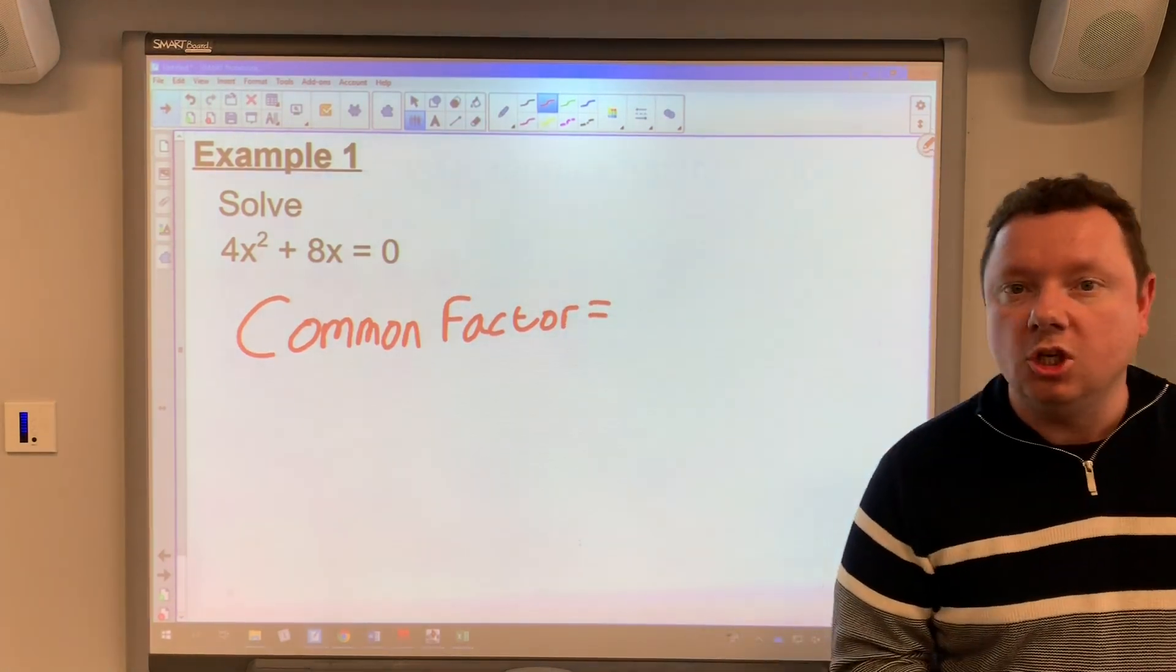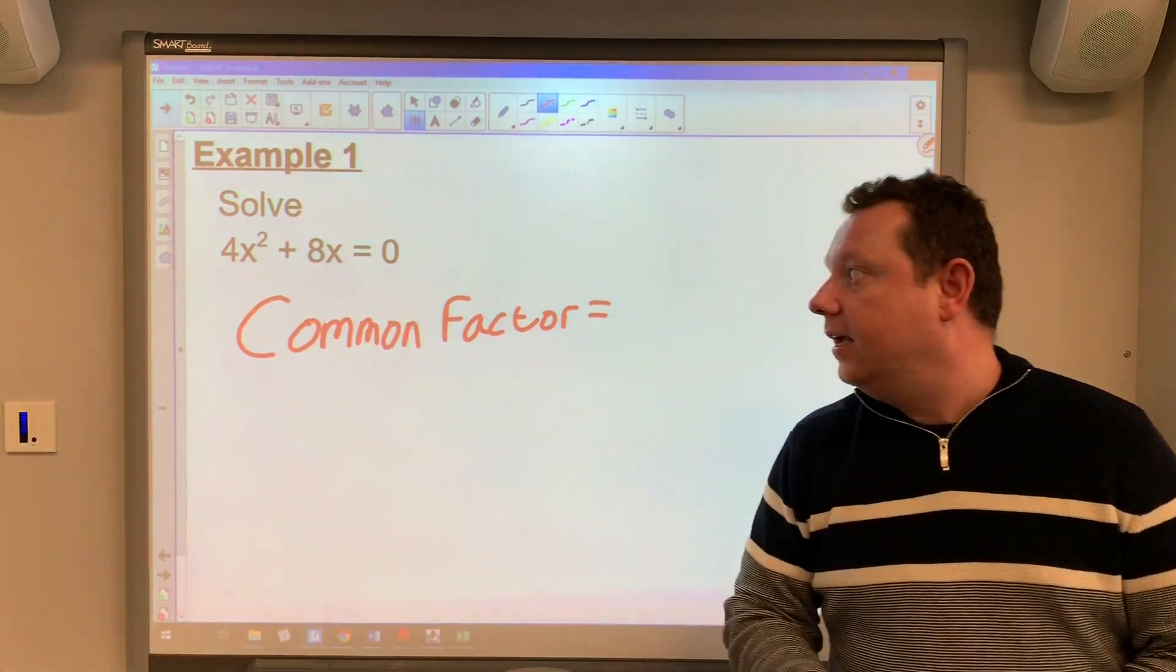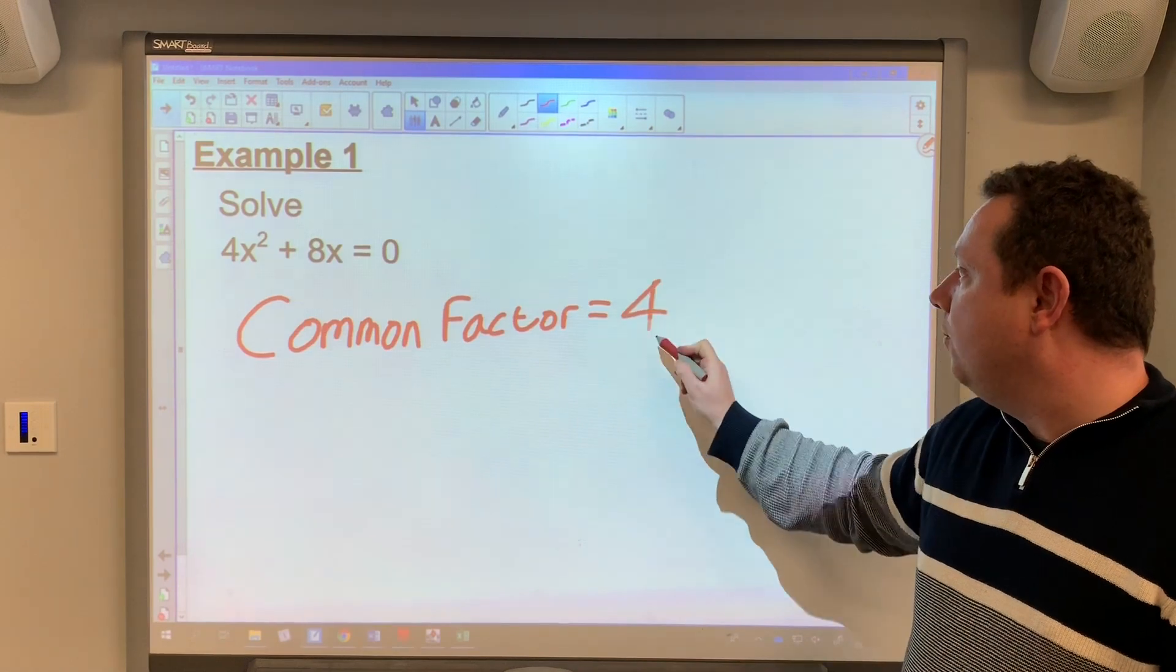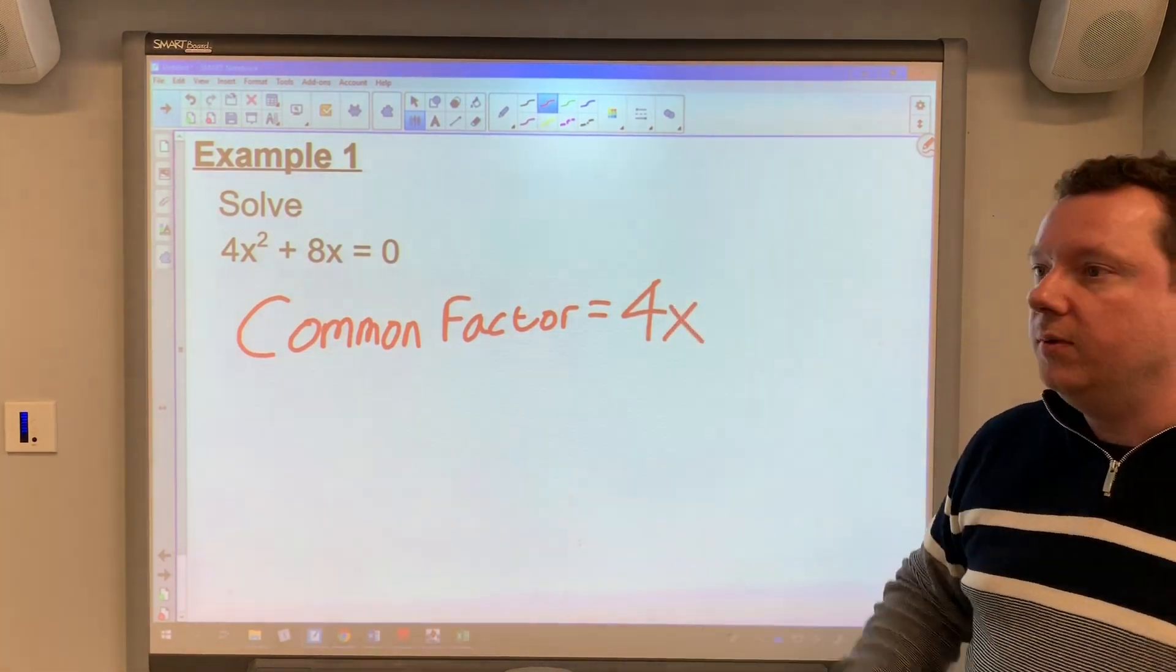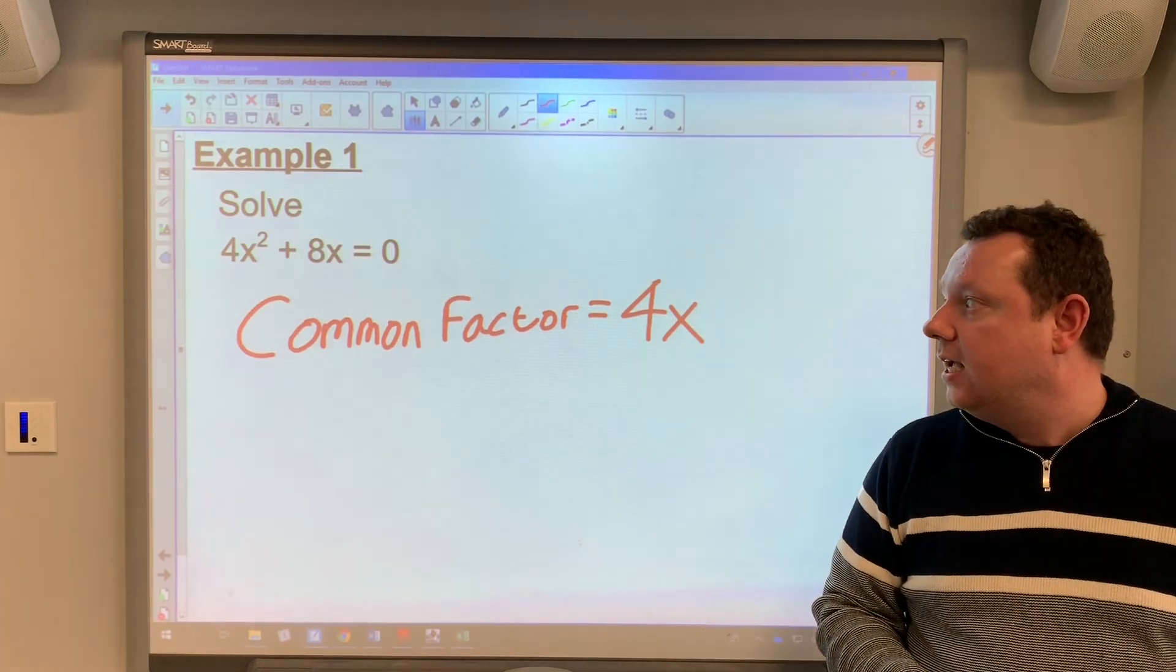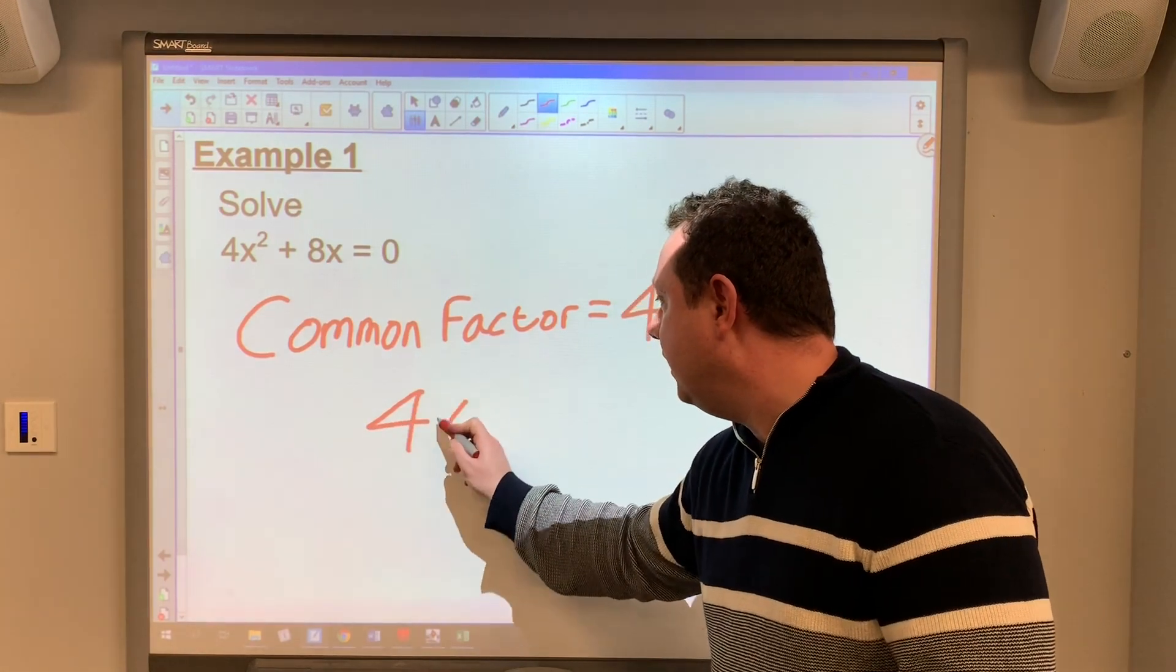Remember a common factor is just a number or letter that goes into both of the terms in the equation. So in this case 4 is the biggest number that goes into 4 and 8, but also x goes into both of them as well. So I just need to divide 4x² by 4x and 8x by 4x.